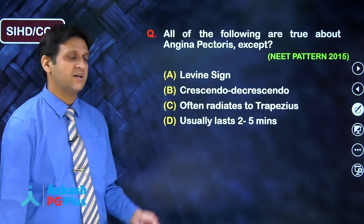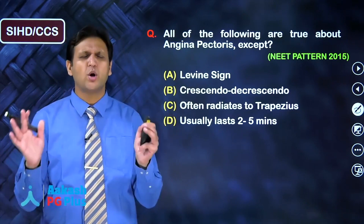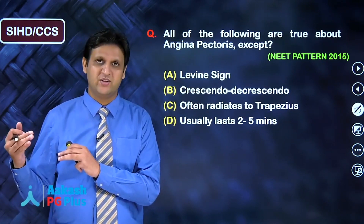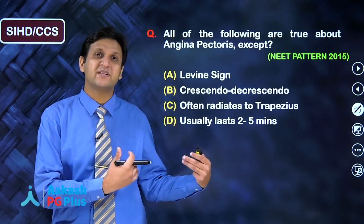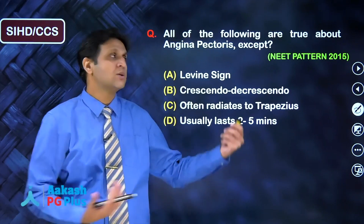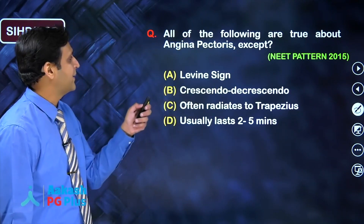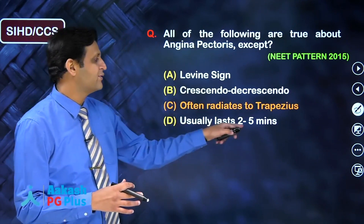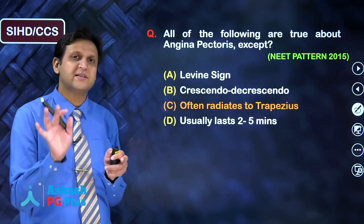A common question: all of the following are true about angina pectoris except. Ischemic heart disease has two broad manifestations: acute coronary syndrome and chronic coronary syndrome, also known as chronic stable angina. Angina pectoris is a manifestation of chronic stable angina. The Levine sign is classic of angina pectoris; it can be crescendo-decrescendo, is short-lasting, usually resolves within 2 to 5 minutes of rest or sublingual sorbitrate. However, radiation to the trapezius is more commonly a feature of pericarditis, not angina.